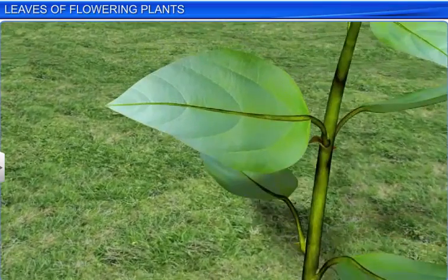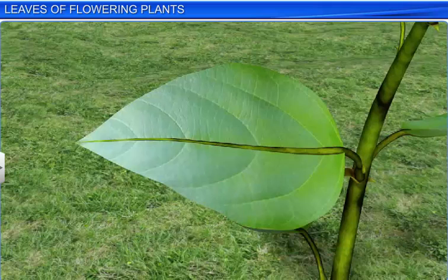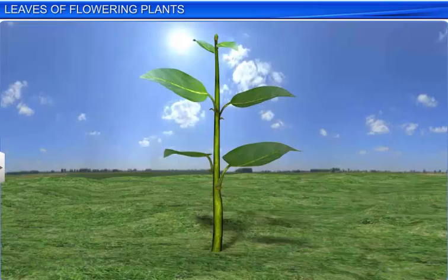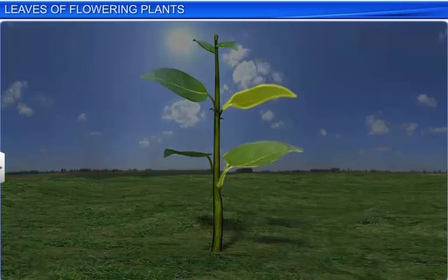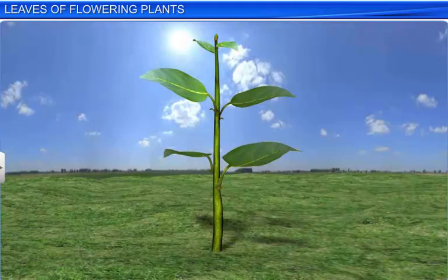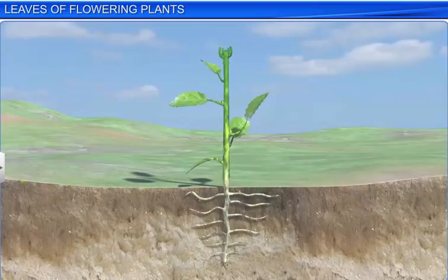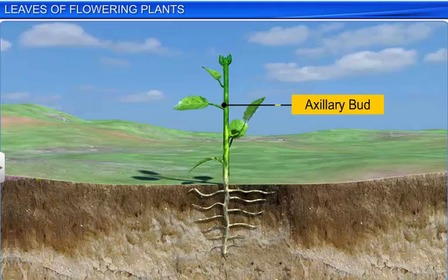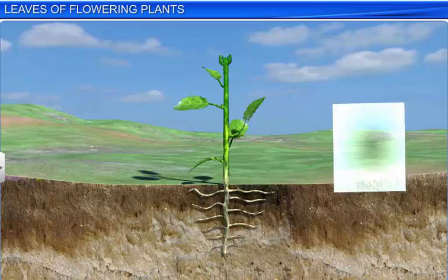A leaf is a plant organ that exists above the ground, and is specialized to carry out the process of photosynthesis. Leaves develop at the node of a stem, and generally have a flat and lateral structure. Moreover, they are arranged in an acropetal order — in other words, they develop in succession from the base to the apex of a stem or a branch. Leaves originate from shoot apical meristems, and bear buds in their axil. These axillary buds later grow into branches. The meristem found at the tip of a shoot is known as shoot apical meristem.